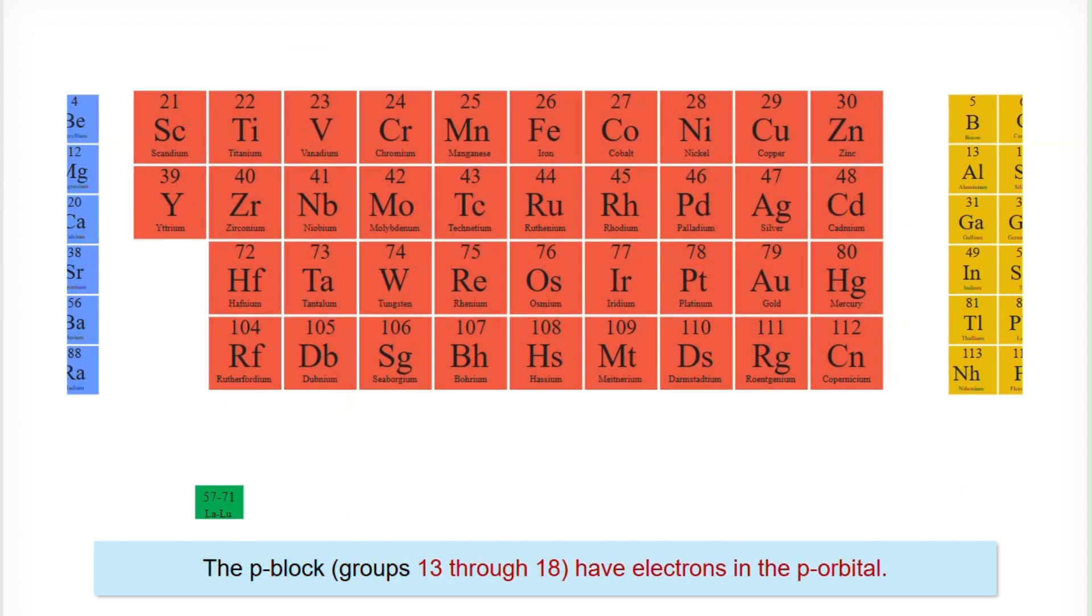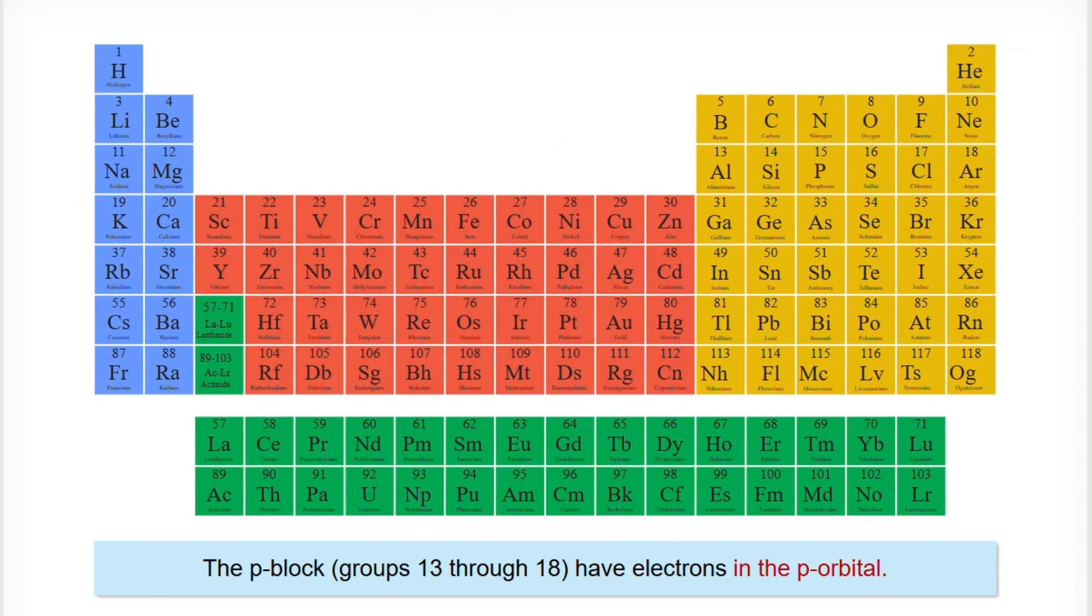The P block, groups 13 through 18 have electrons in the P orbital.